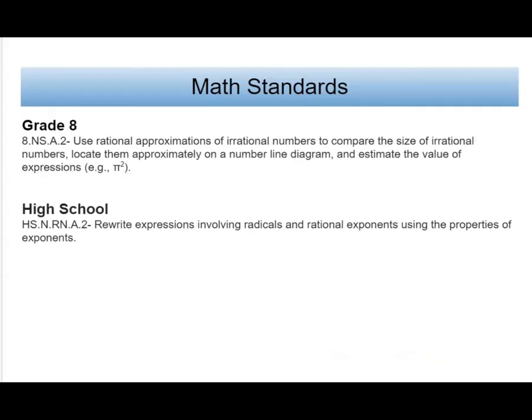In grade level eight, the domain changes to number sense, that's the NS right there, and using that now and introducing the word irrational numbers and also rational numbers. So they'll be able to now have an idea of the value of an irrational number and compare it on a number line and also use an estimation of what that number like, for example, pi squared looks like compared to the other numbers and fractions.